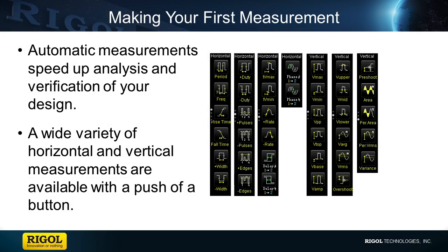Regal scopes are packed with performance and features. One of these is automatic measurements. A wide variety of horizontal and vertical measurements can be enabled by a push of a button. There's no need to manually position cursors and calculate measurements.